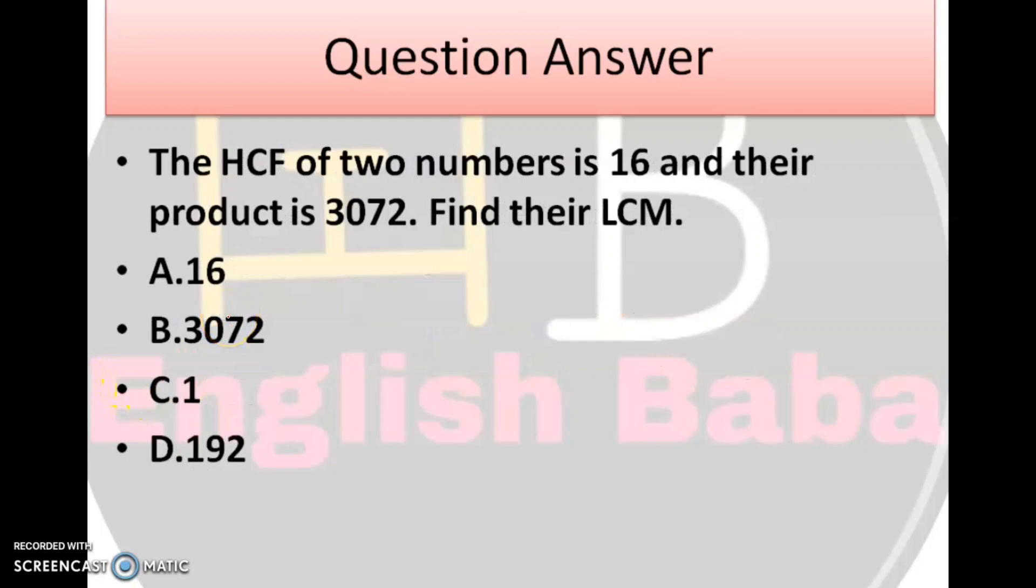Next question. HCF of 2 numbers is 16, and your product is 3072, find your LCM. Similar to the previous one, yahan hamen HCF diya hai, aur unka product diya hai. Hamen hai nikalna hai, LCM. To HCF into LCM is equal to A into B. To aapka jo LCM aayega, wo aayega, option number D, 192.